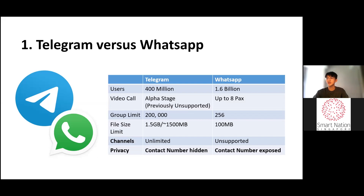Telegram has the feature of channels, which can disseminate information. In terms of privacy, contact numbers are hidden on Telegram but exposed on WhatsApp.